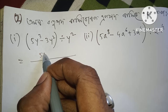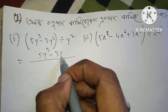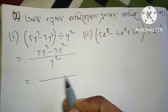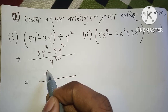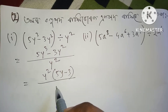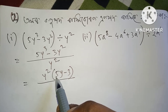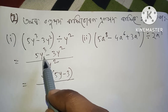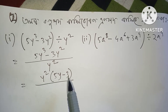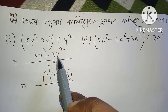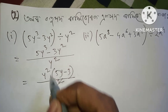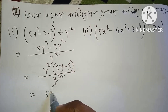5 y to the power cube minus 3 y to the power 2, divided by y to the power 2. Common factor is y to the power 2. Take y squared as common: 5y minus 3. y to the power 2 divided by y to the power 2, cancel. Answer: 5y minus 3.